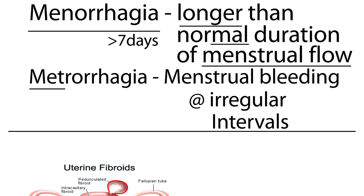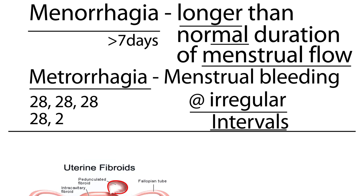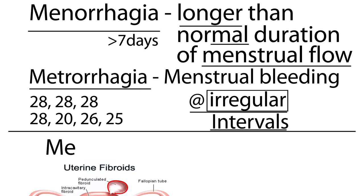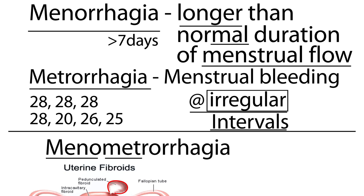Metrorrhagia is menstrual bleeding at irregular intervals. Normally the cycle is every 28 days, but with metrorrhagia it might happen every 22 days or every 20 days — irregular intervals, or instead of a standard 28-day cycle the next month it comes 20 days later, then back to 28, then 25. There is also a word that combines these two: menometrorrhagia — longer than normal duration and menstrual bleeding at irregular intervals combined.